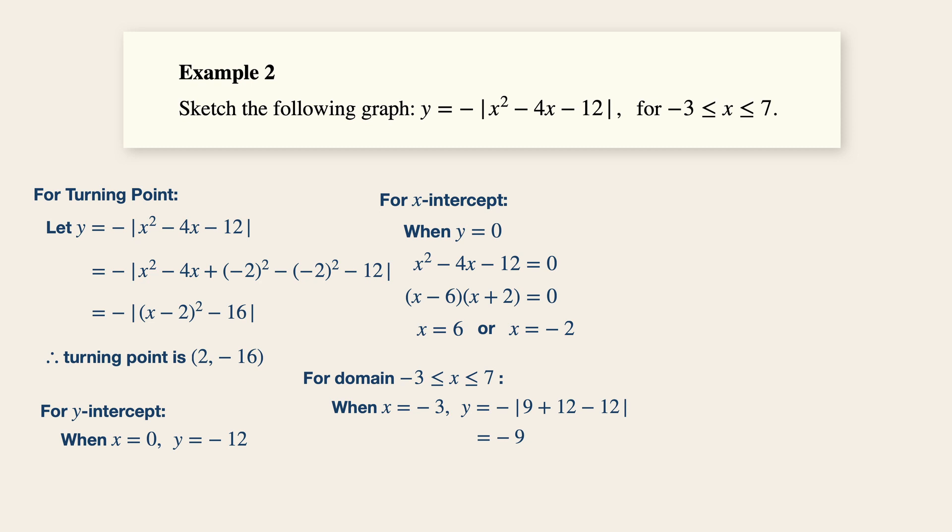And when x is equals to 7, y is equals to minus 49 minus 28 minus 12. And this gives us a value of minus 9 as well.